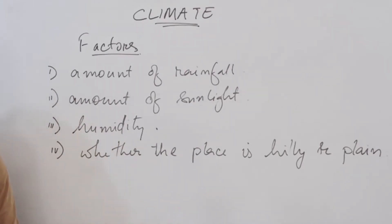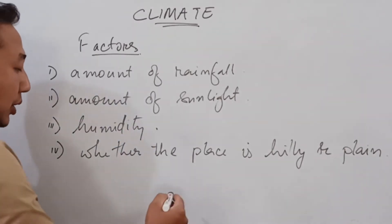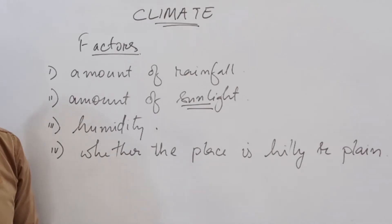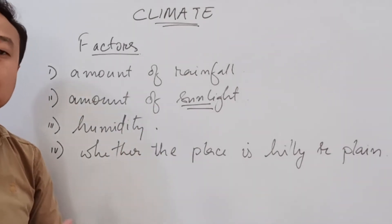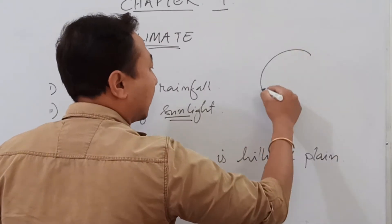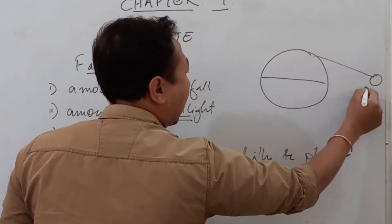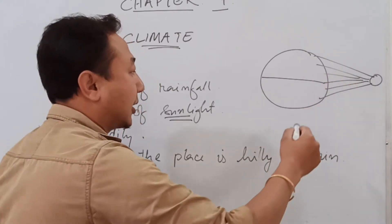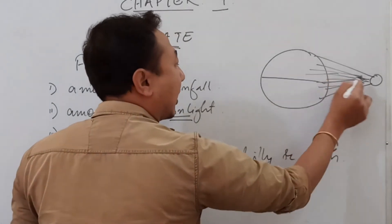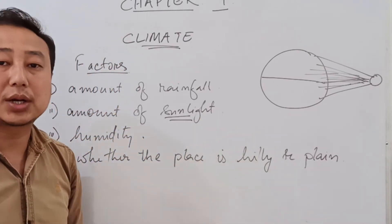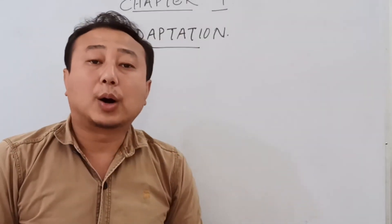The climate of an area mainly depends on the amount of sunlight it receives. The equatorial region receives more sunlight compared to the polar region, so the equatorial area has a hotter climate. The amount of sunlight received by different parts of the Earth depends on the position of the Earth towards the sun. In the equatorial region, sunlight is concentrated and falls in greater amounts, while the polar region receives less sunlight, giving it a colder climate.